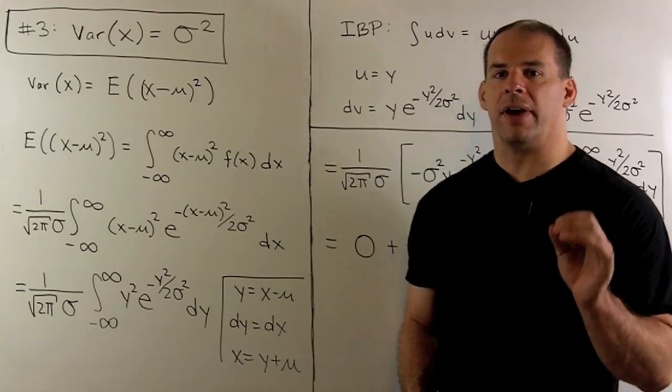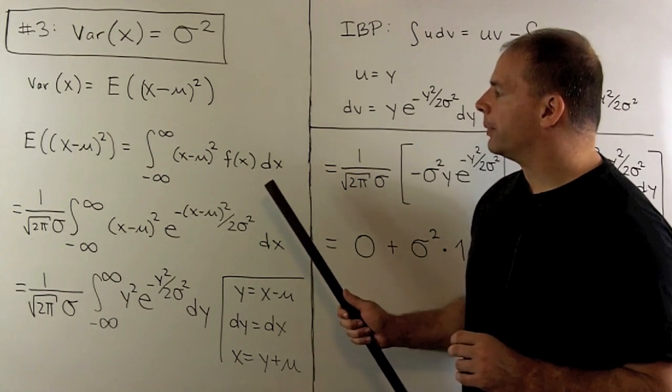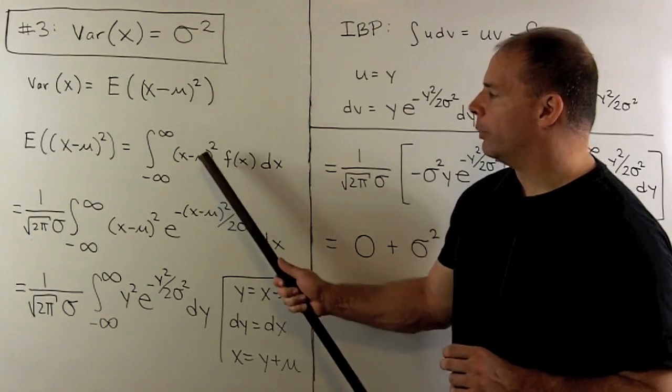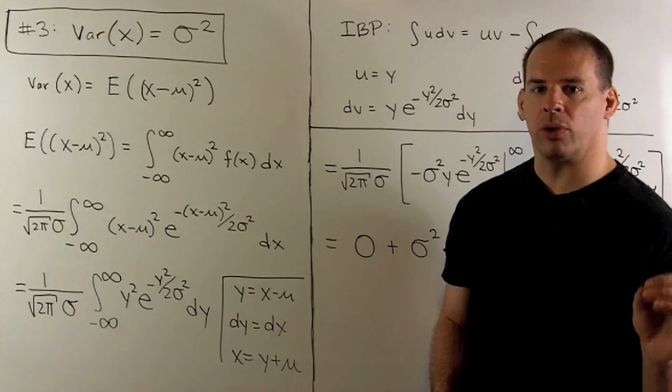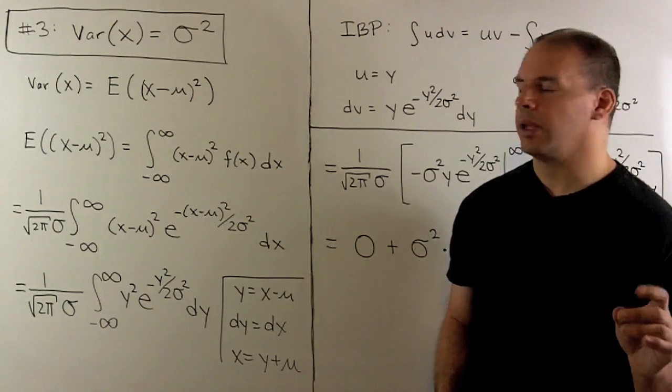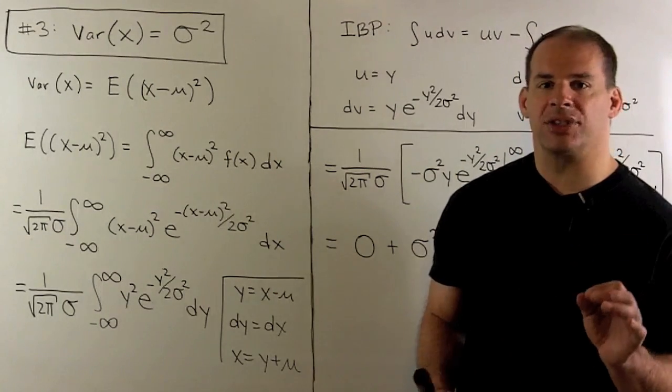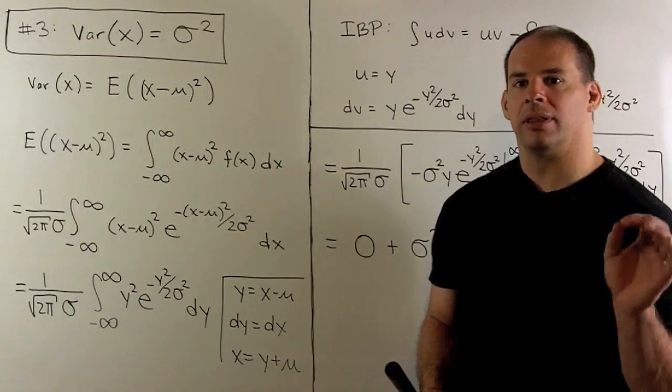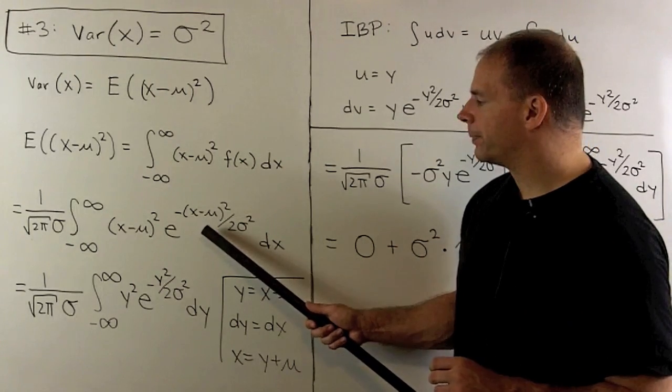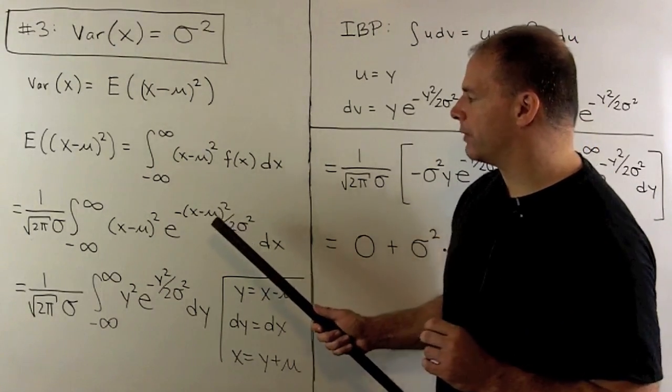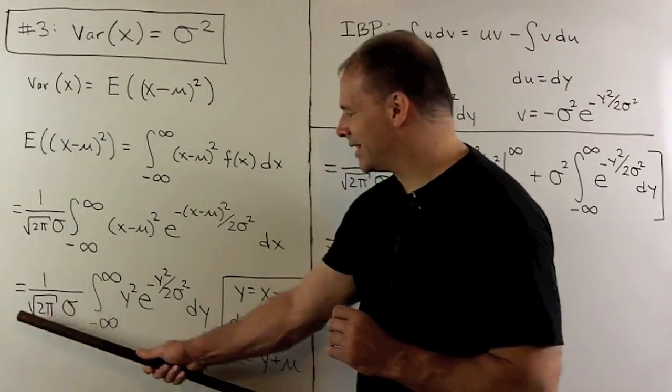Finally, we show that the variance of our distribution is σ². So take our density function. We multiply by (x minus the mean)², and then we integrate over the real line. Now, our integrand is always positive. So we want to have the cancellation problem like we did with the mean. Put in for f(x). I do the substitution from before, y equals x minus μ. And that gets us to this integral here.